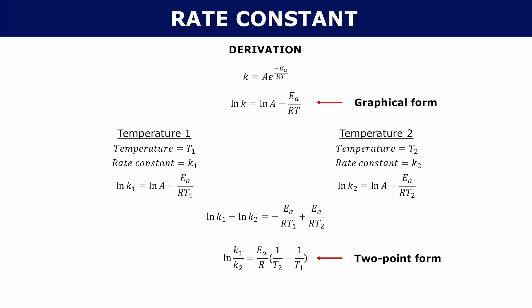That's your two-point form — the exact same thing as the natural log of k2 over k1 equals Ea over R times 1 over T1 minus 1 over T2. These are equivalent; you can rearrange the order, but you have to keep the relative orders consistent — if k2 is on top, then T1 must go on the right, and vice versa.